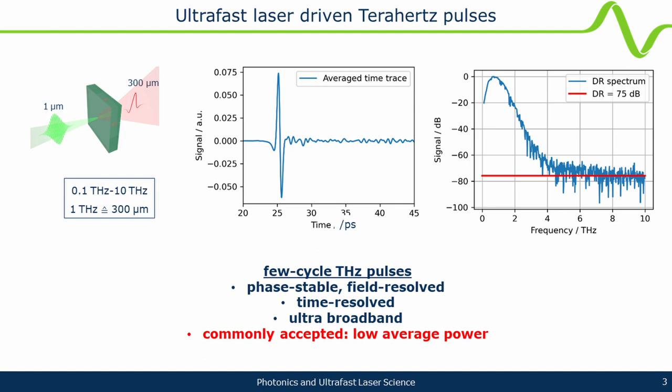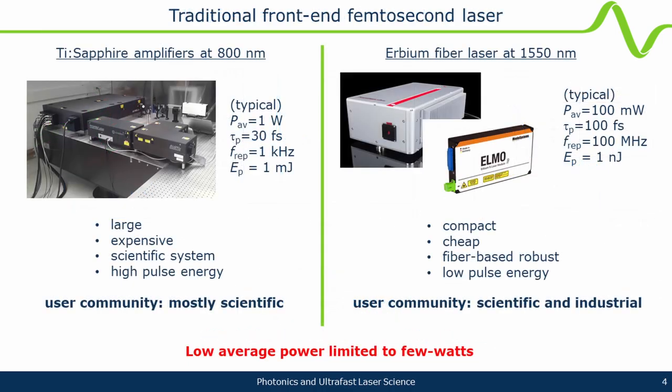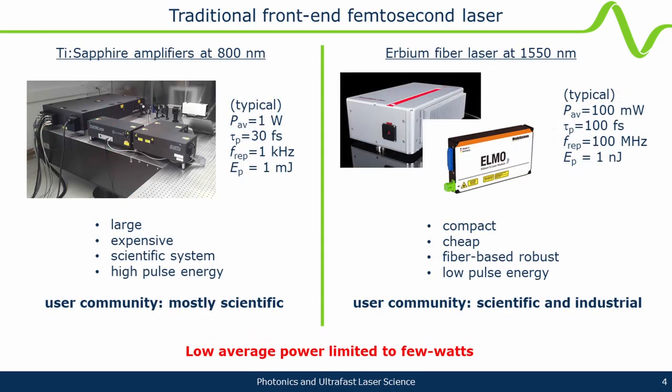It's kind of commonly accepted in the community — and this is where we started — that these are low power. As we heard in one of the earlier talks, broadband TDS sources typically produce around 100 microwatts of power. This comes a little bit from the front ends typically used for these systems.